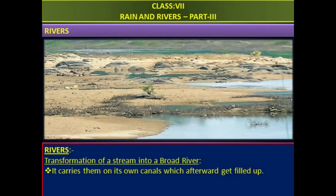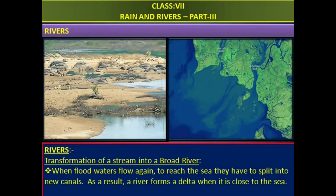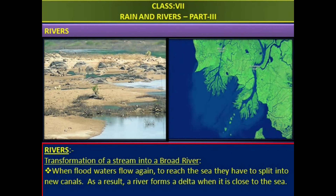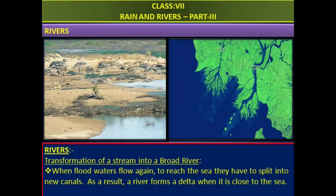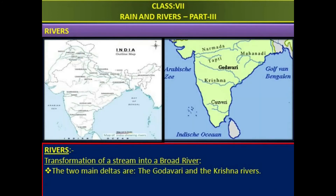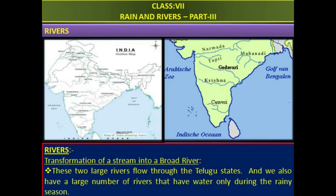It carries them on its own canals, which afterward get filled up. When floodwaters flow again to reach the sea, they have to split into new canals. As a result, a river forms a delta when it is close to the sea. There are two main deltas in our state — the Godavari and the Krishna rivers. These two large rivers flow through the Telugu states, and we also have a large number of rivers that have water only during the rainy season.